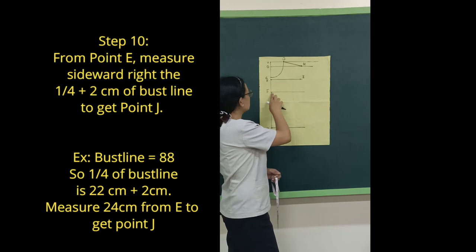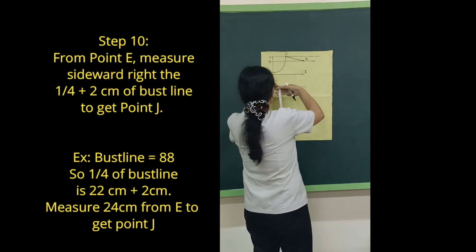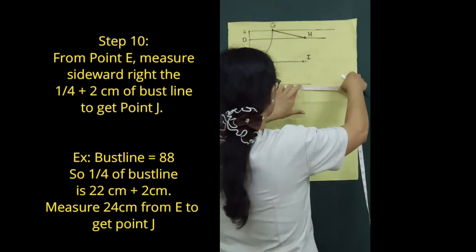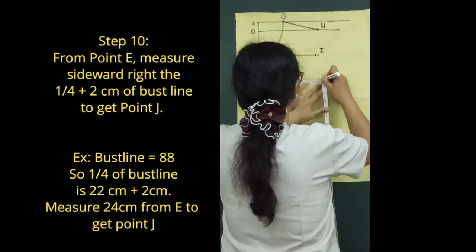Step 10: From point E, measure sideward right the 1/4 plus 2 cm of bust line to get point J.